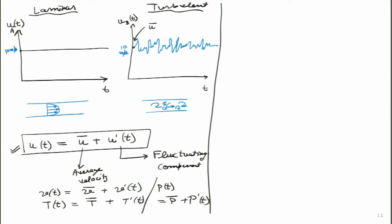For the laminar case, the shear stress is simply μ(∂u/∂y) and the heat transfer rate is simply −k(∂T/∂y). The question is: will these expressions remain the same for the turbulent case, or will they change? That is the question we want to start addressing today.